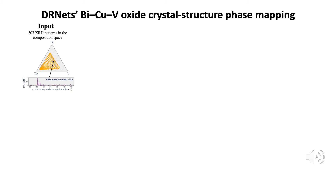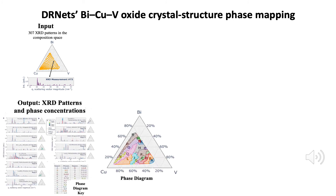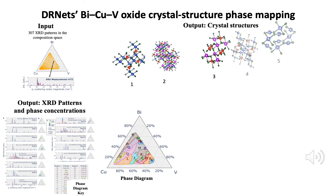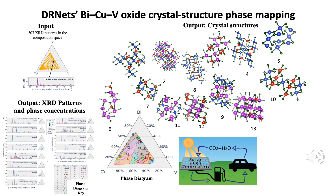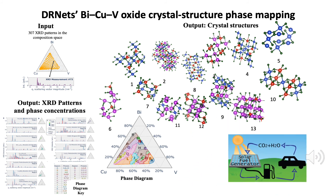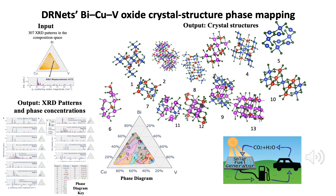DR Nets unraveled the previously unsolved bismuth copper vanadium oxide system using only 307 X-ray diffraction patterns and identified and separated 13 crystal structures in 19 unique mixtures of the 13 single-phase materials. By encoding the scientific principles of crystal structure phase mapping, DR Nets enabled the discovery of complex mixtures of crystalline materials that convert solar energy into storable solar chemical fuels.